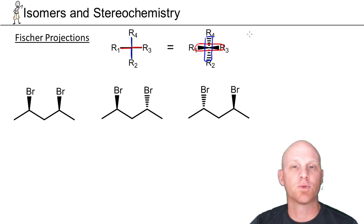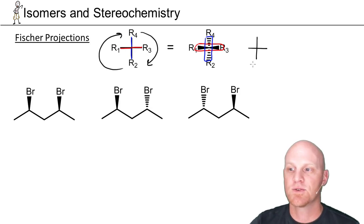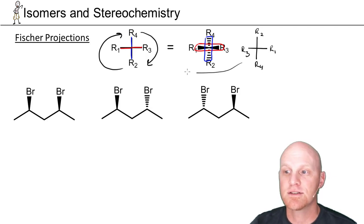It turns out you're not allowed to rotate them any way you want willy-nilly. The only rotation you're allowed to do is to rotate them 180 degrees in the plane. So in this case, if we put R4 here, and then R3 here, R2 here, and R1 here, it turns out this is the same thing as the first Fischer projection.